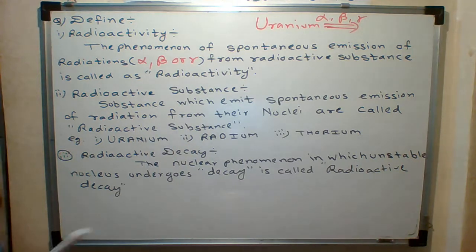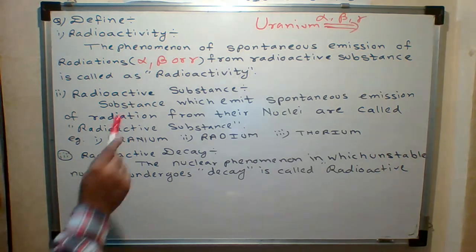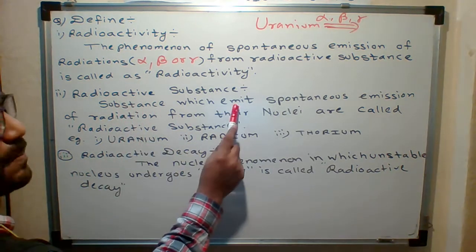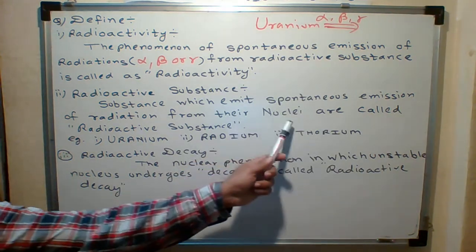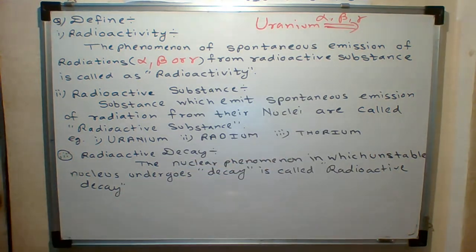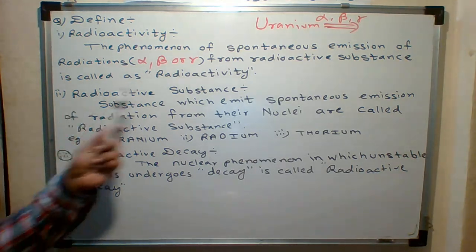What is the next definition? What is radioactive substance? Radioactive substance is that substance through which from their nucleus radiation occur. So what is the definition? Substance which emit spontaneous emission of radiation from their nuclei. Nucleus comes from radiation. Such substance is called radioactive substance.